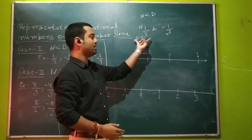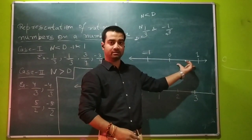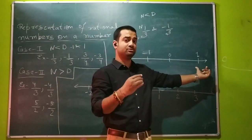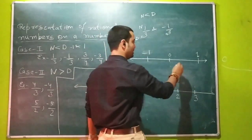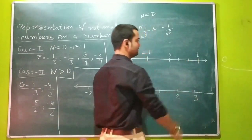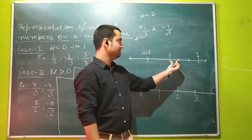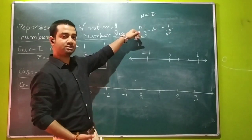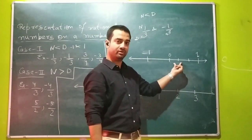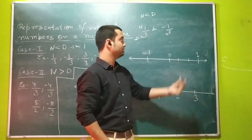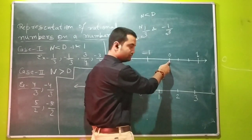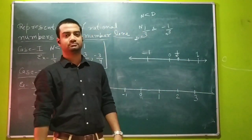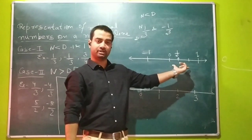To draw 1 by 3 on the number line: the denominator tells us into how many parts we will divide the line between 0 and 1. Since the denominator is 3, we divide the distance between 0 and 1 into 3 equal parts using 2 lines. This gives us part 1, part 2, and part 3. The numerator tells us which part represents 1 by 3. Since the numerator is 1, from 0 the first part is 1 upon 3. This is how we show 1 by 3 on the number line.